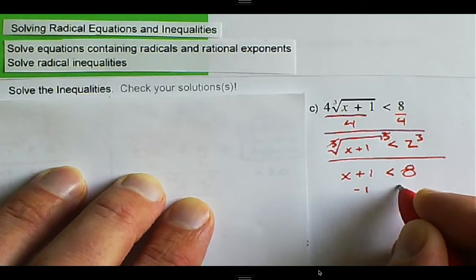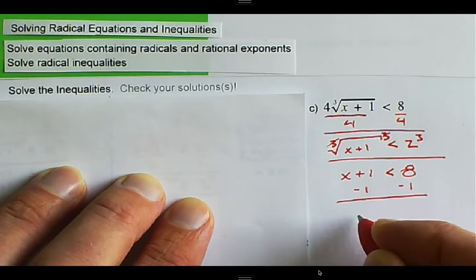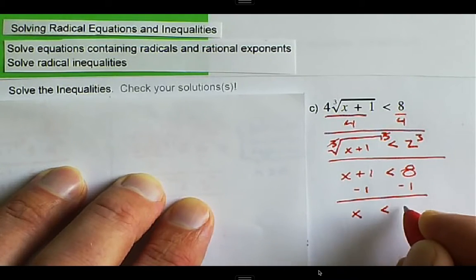And we can subtract 1 from both sides, and we get x is less than 7.